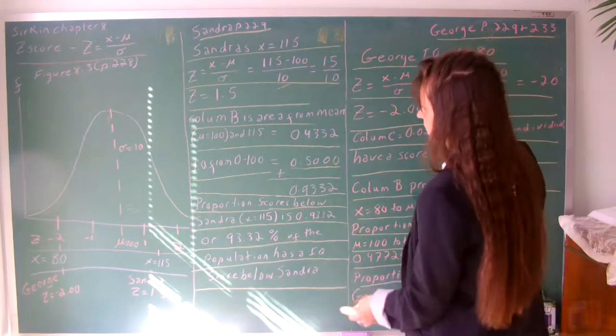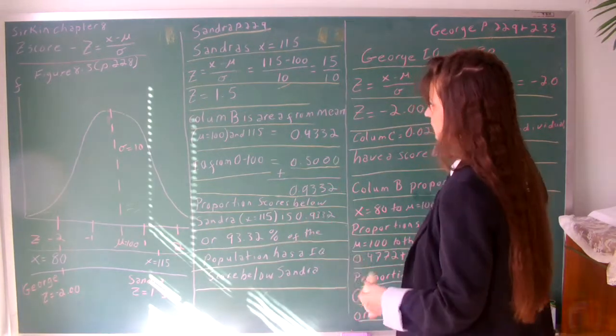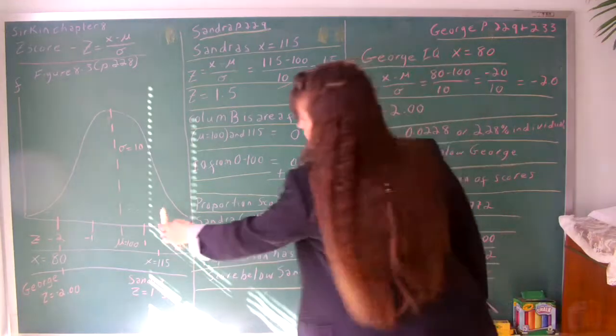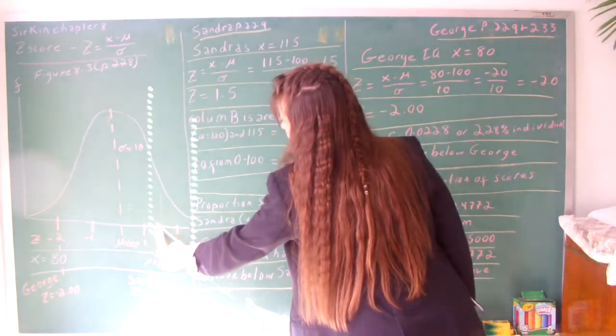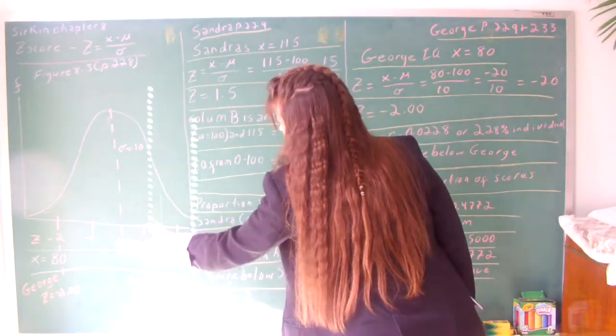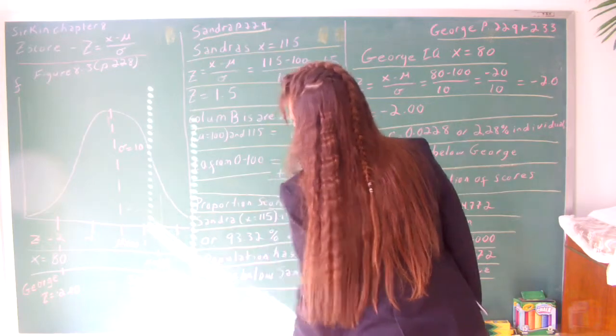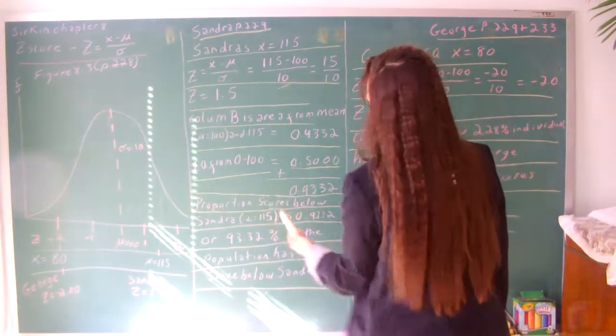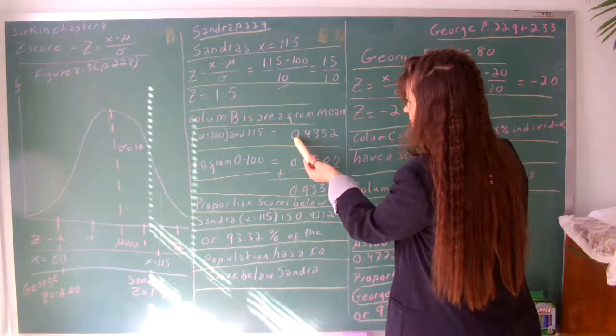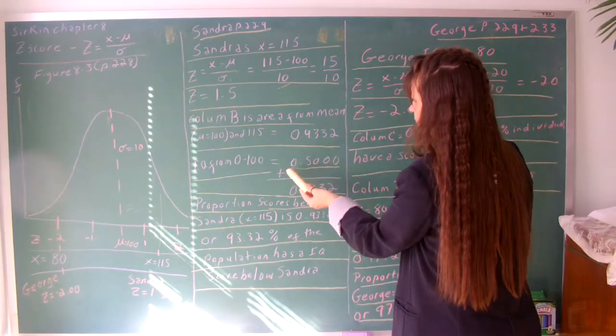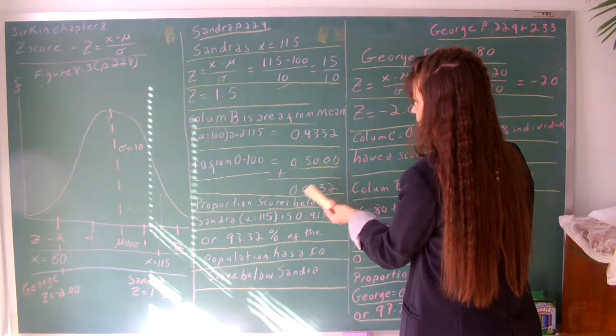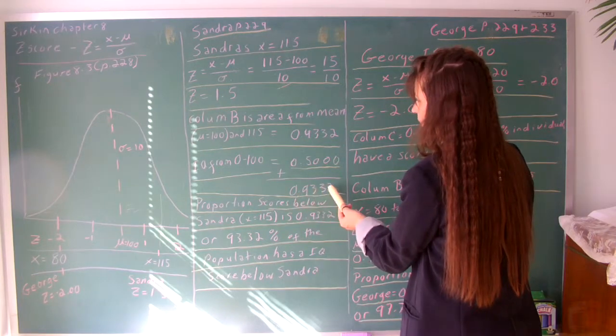We add to figure out how many scores are below Sandra's, because B shows us how many are from 100 to 115, and we add that to the other side. So it's 0.4332 plus 0.5000 equals 0.9332.